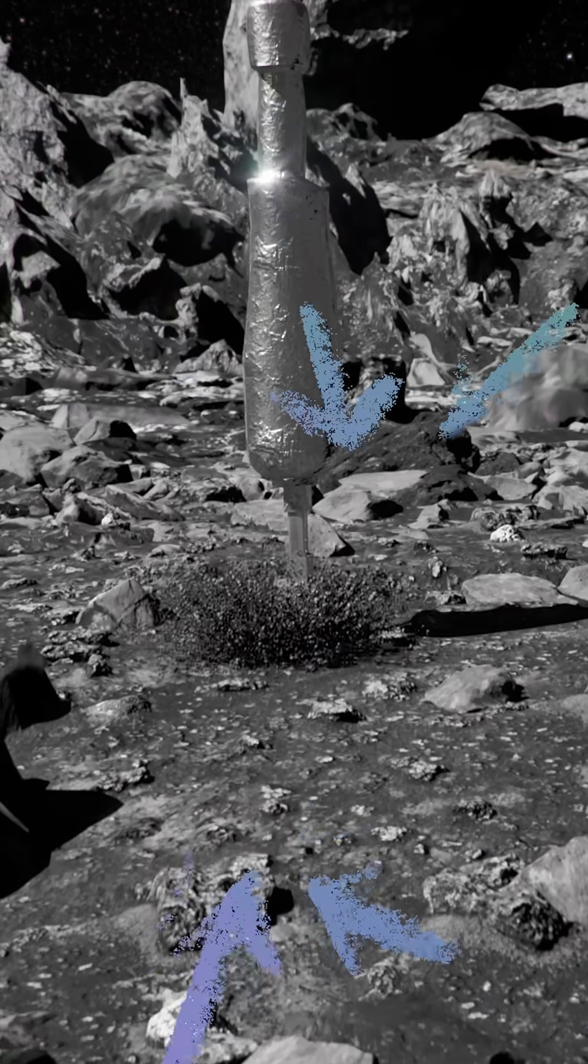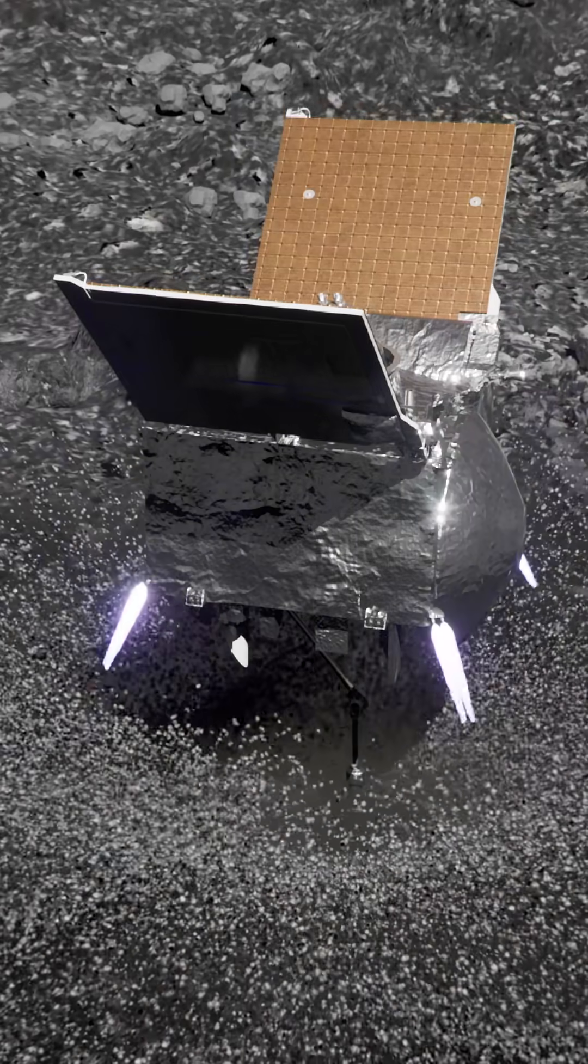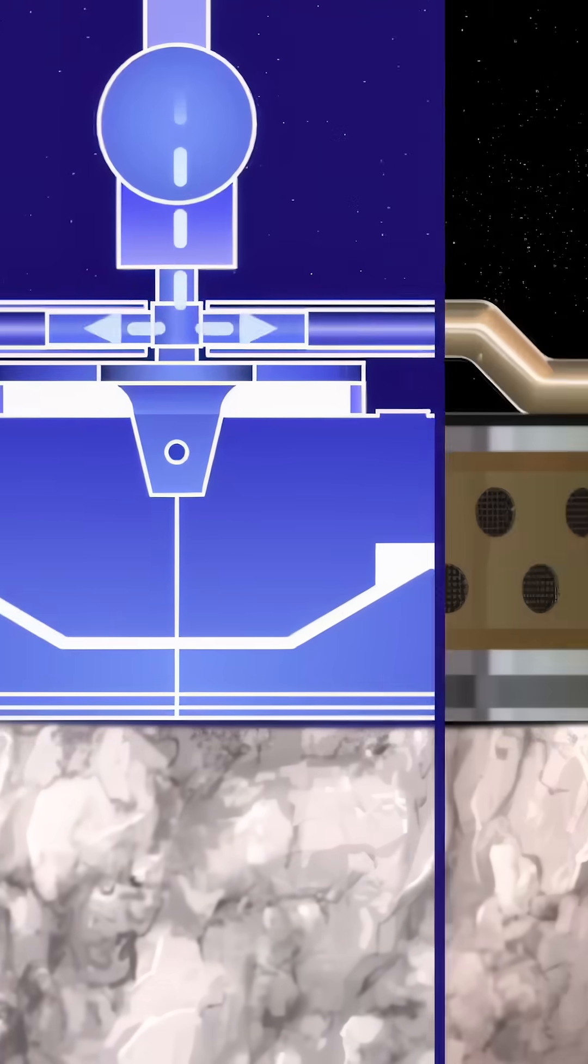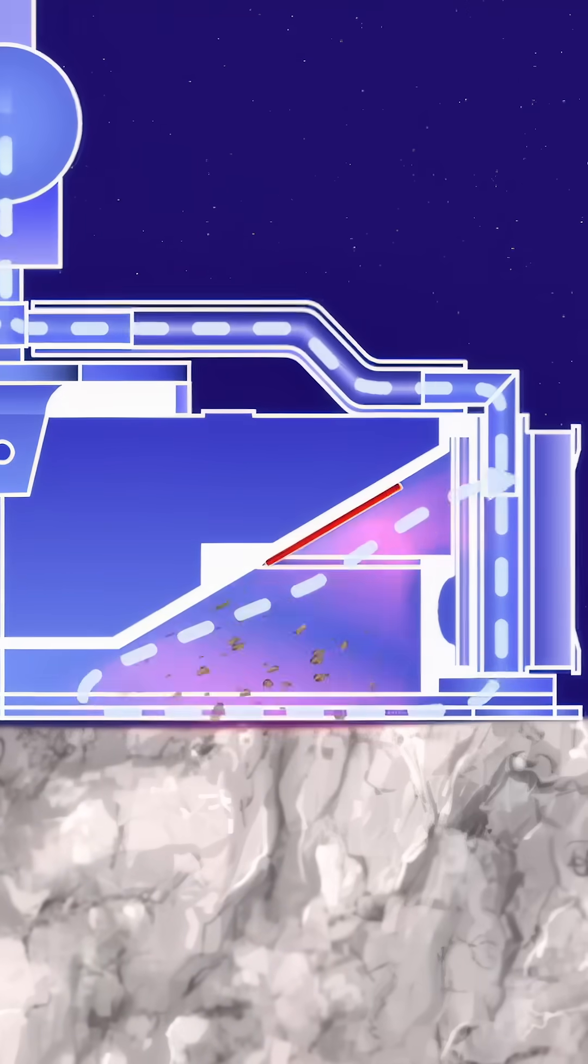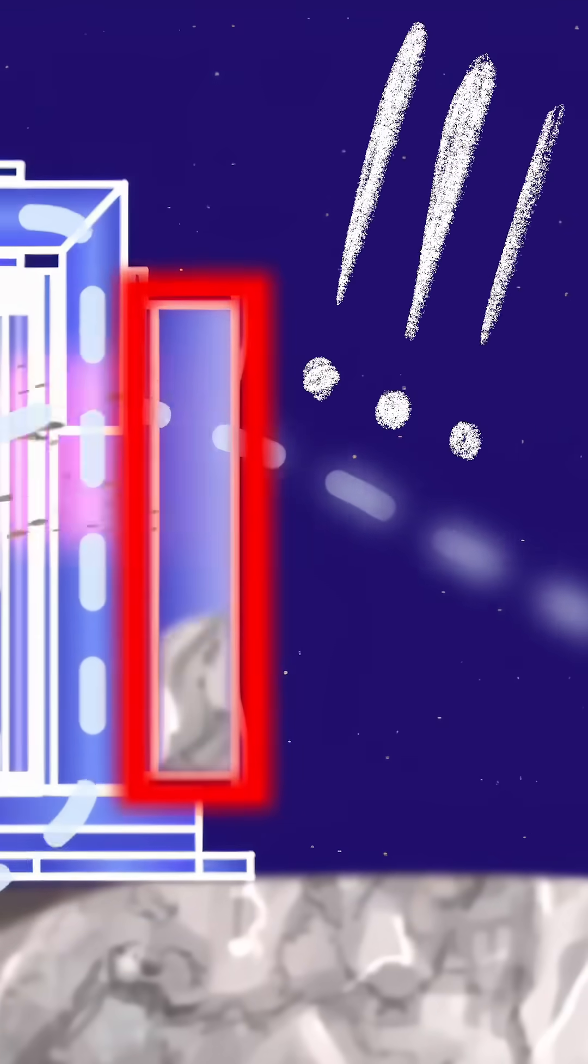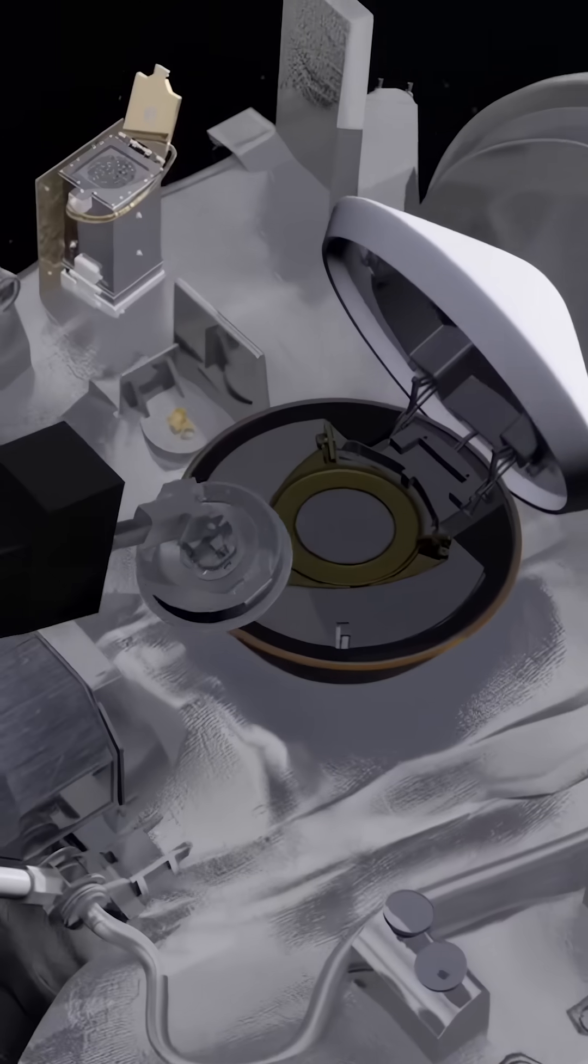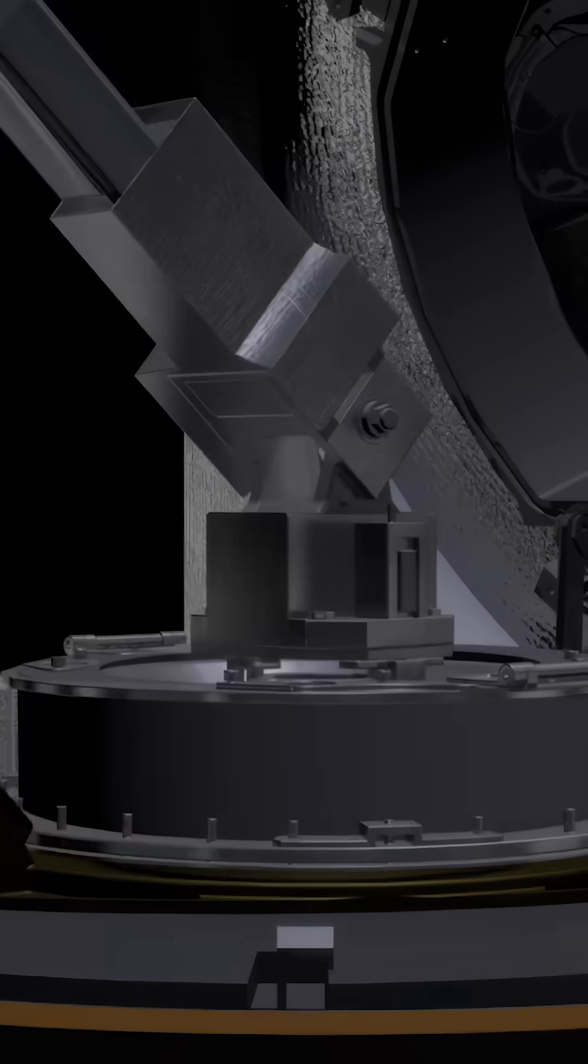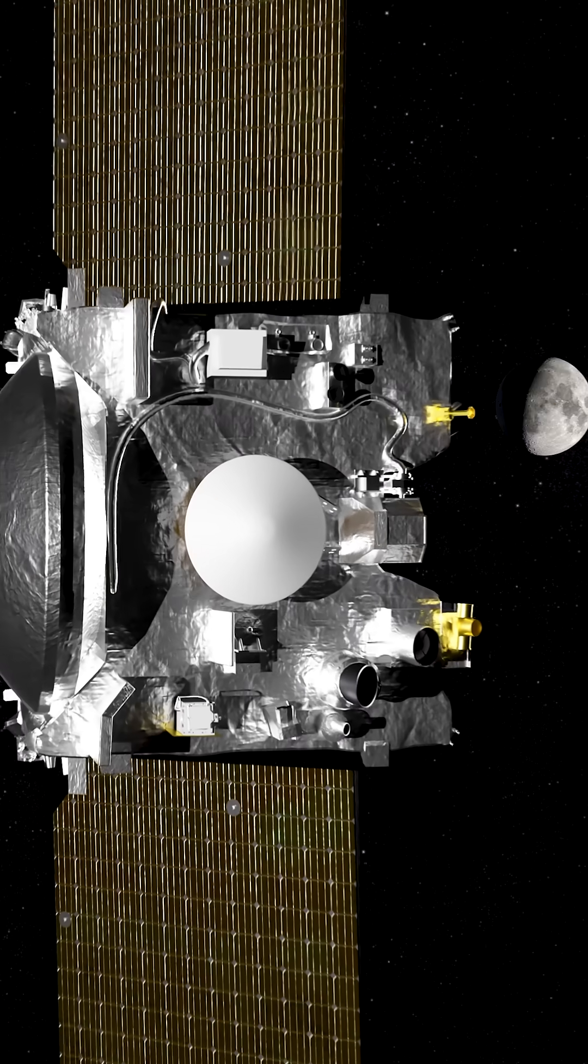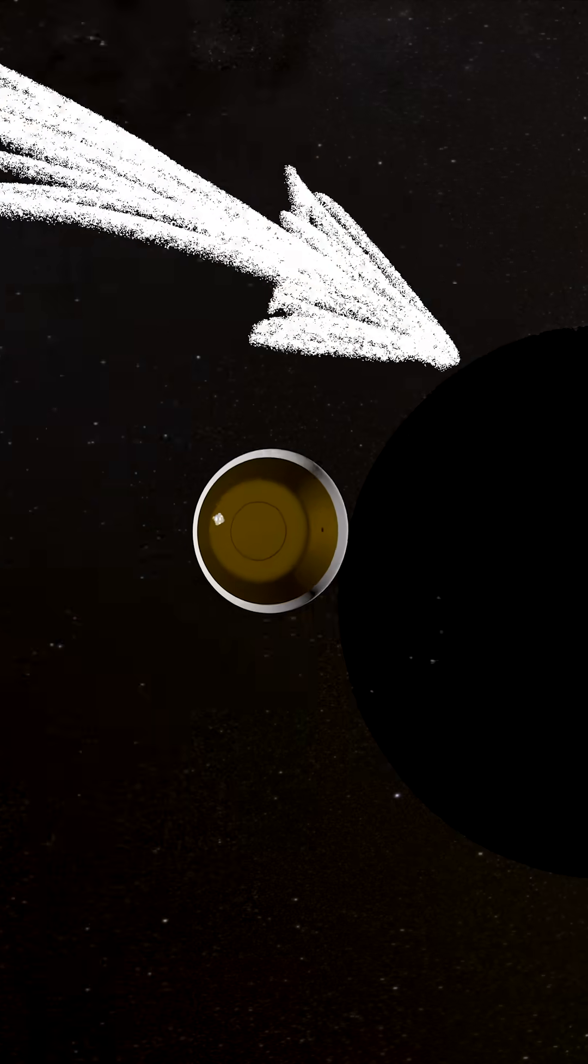We then took a sample from the surface by touching down onto the surface and essentially sucking it up, which then was deposited into the spacecraft itself. And then we flew that sample back home in the spacecraft and dropped it off at Earth.